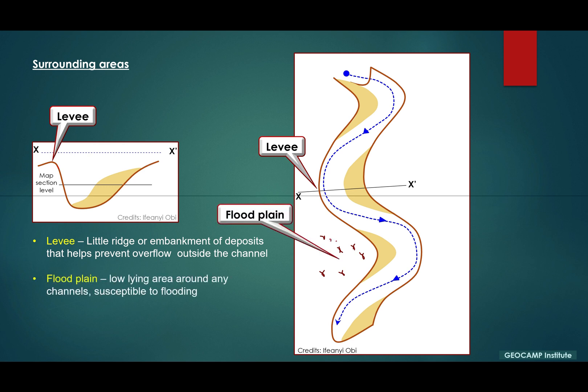The floodplain is the low-lying area outside the channel fairway. Generally that's where you have vegetation, and any time the channel overflows its bank, this floodplain is going to be flooded because it's quite low-lying and just very close to the channel.